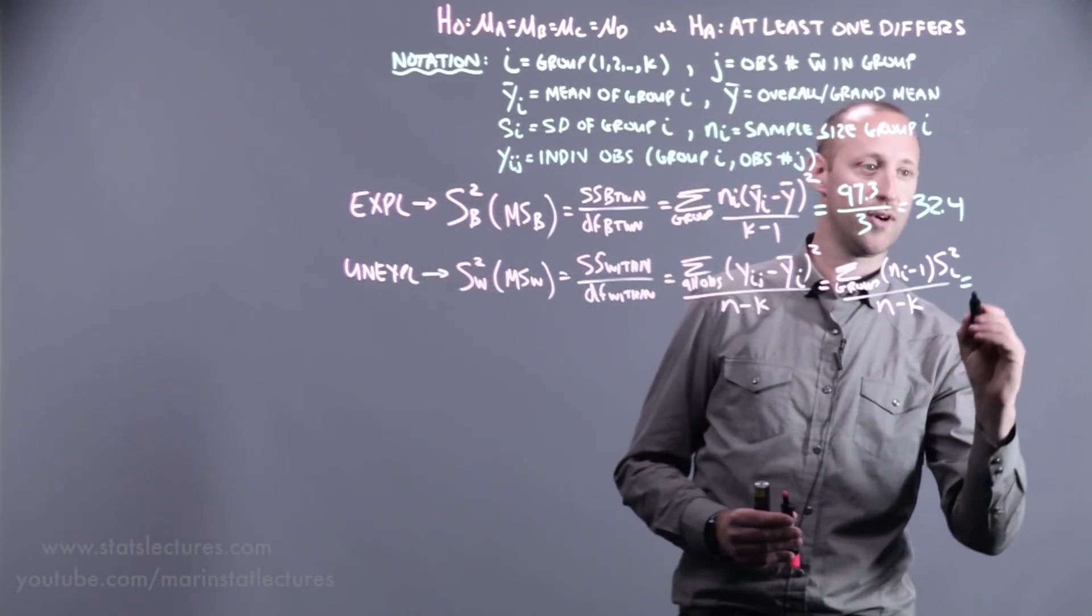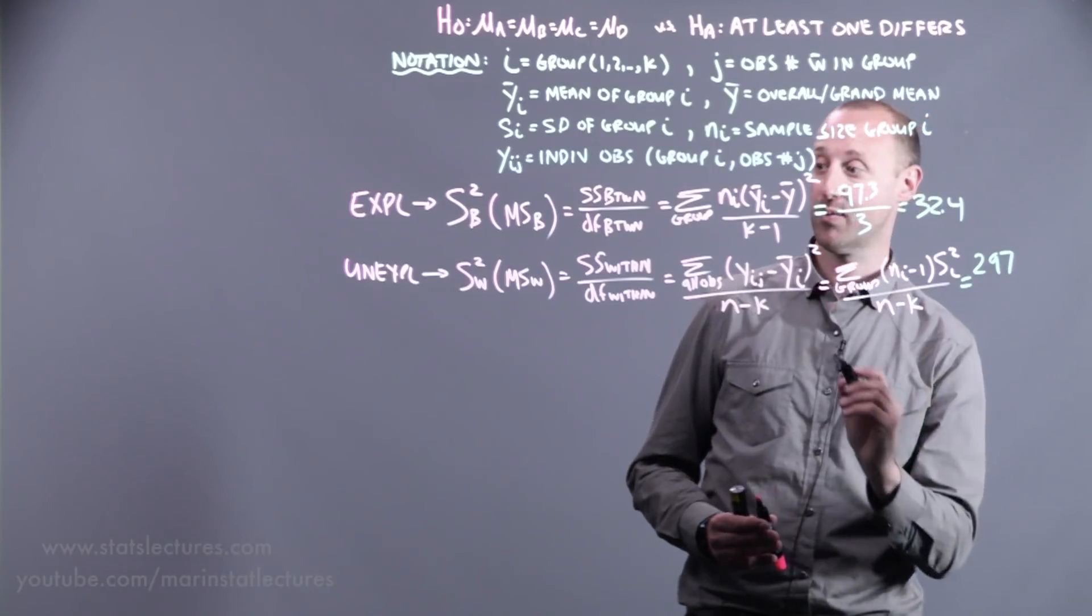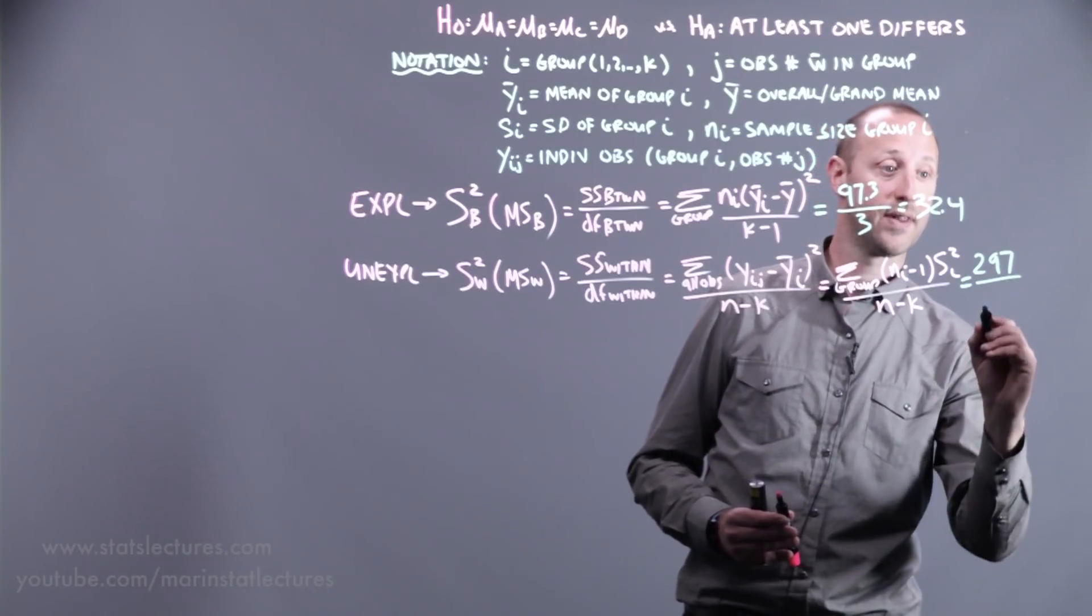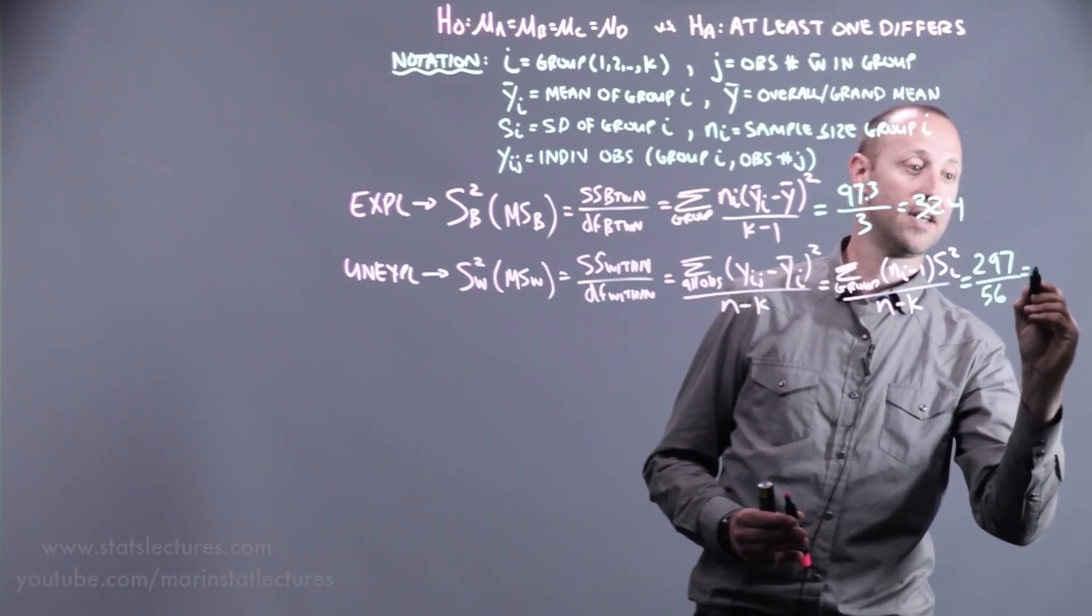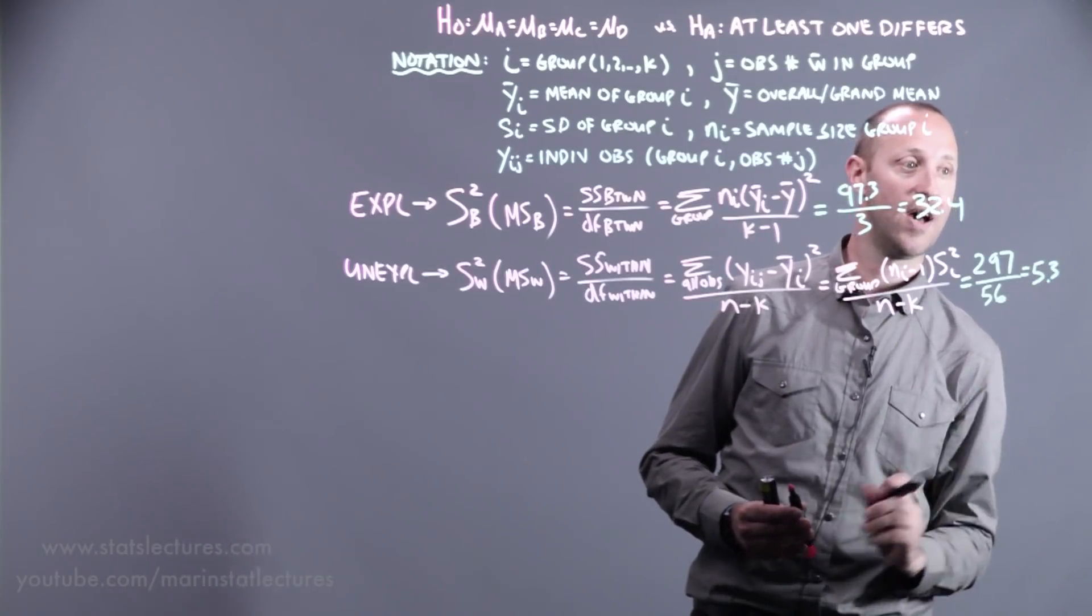If you work this out, for example, you're going to find the sum of squares within a group is 297, its degrees of freedom 56, and this comes out to be 5.3.